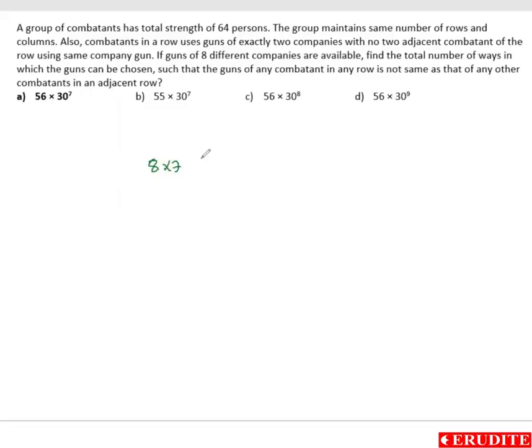Now that is for first row 56. In second row it will be 6 into 5 because 2 already used here.